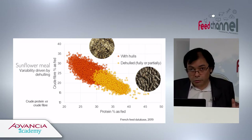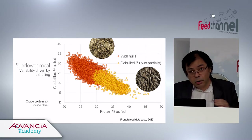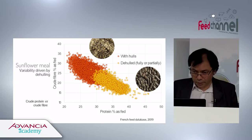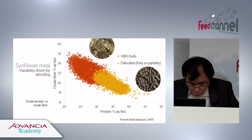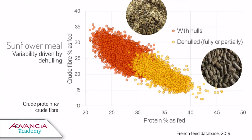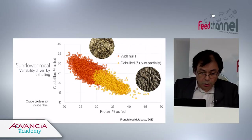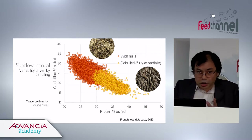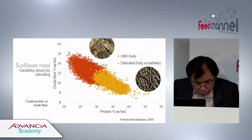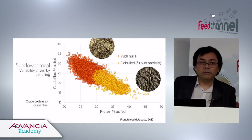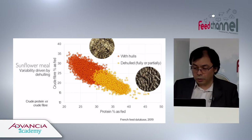The result is not exactly two categories but a continuum between totally de-hulled and non-de-hulled soybean meal. Protein content is quite large: for non-de-hulled meal, protein ranges from about 20 to 30%, and for de-hulled or partially de-hulled meal, it ranges from 30 to over 40% for specific types.